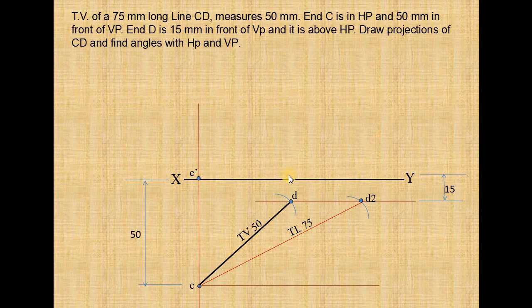Now you draw a vertical line from d like this. Now you take the vertical line from d2 up to C dash line. Draw an arc like this. You take C dash as center, C to d2 as radius, draw an arc from this line to this line and name it as d dash.